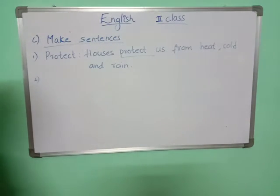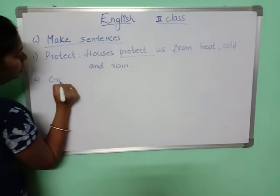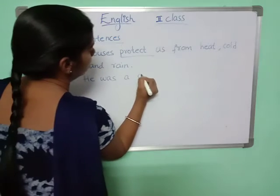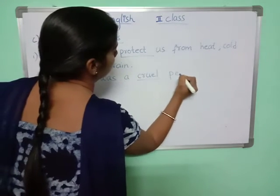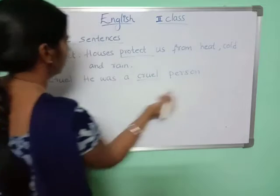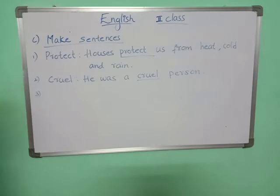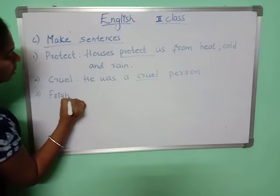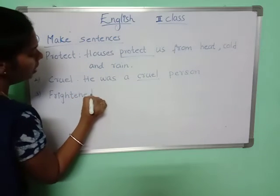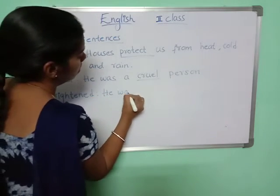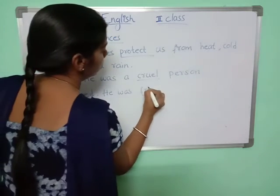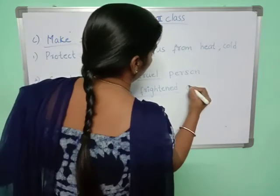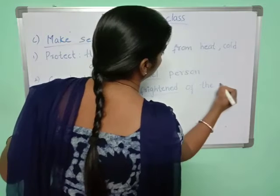Second: cruel. He was a cruel person. Third: frightened — spelled F-R-I-G-H-T-E-N-E-D. He was frightened of the sounds.